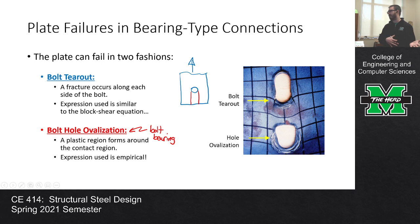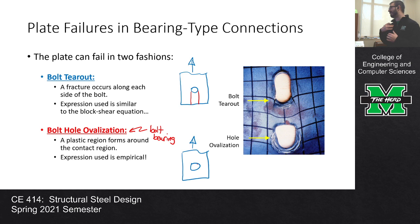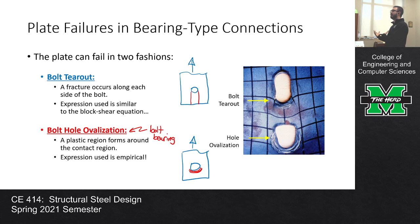With hole ovalization, the bolt comes into contact with the plate and instead of tearing it out, it mashes it up — yields and plastifies, turning the metal into the equivalent of Play-Doh around the end of the bolt. The geometry of the hole changes. You figure out which of the two can happen and take the minimum.